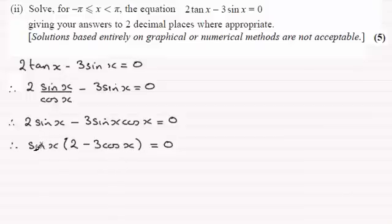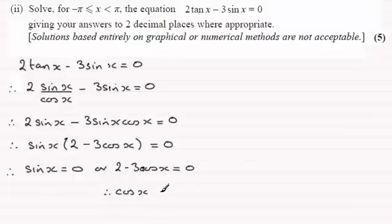So I've got an equation with one trigonometric function. So therefore, we've got sin x for the first factor here. That could be equal to 0. Or this second factor could be equal to 0. That is 2 minus 3 cos x equals 0. So if I rearrange this one for cos x, then I therefore have cos x equals 2/3, 2 divided by 3.